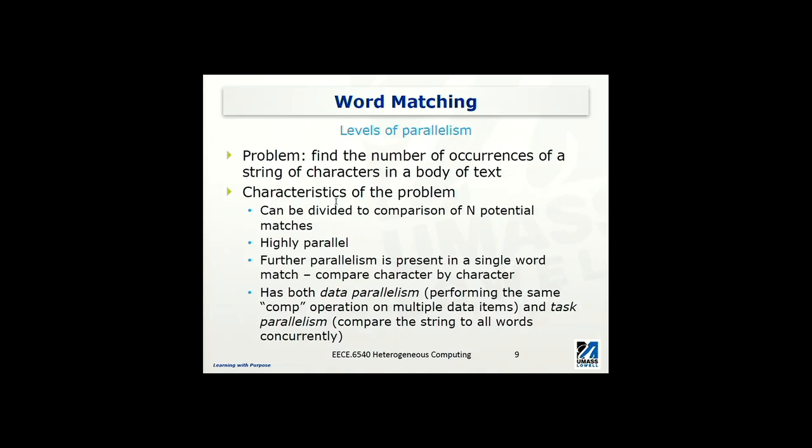Now we're going to use another example to explain more about this parallelism. Given this example, to find the number of occurrences of a string of characters in a body of text. So you have, let's say, one full page of text. It has hundreds or two hundreds of words. And now you're given one single word. And you will ask how many times this particular word occurred in this text. So this is the problem we want to solve. This problem is different from the vector multiplication. It has its own characteristics. This problem can be divided to comparison of N potential matches.